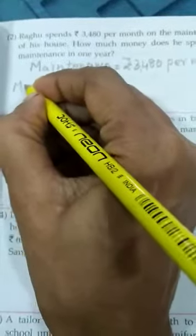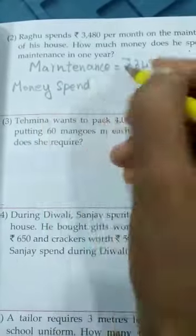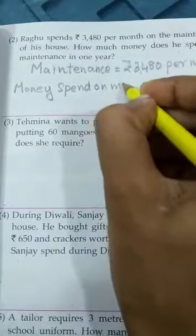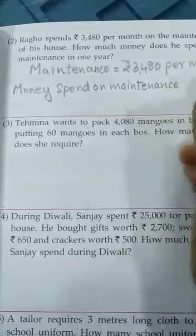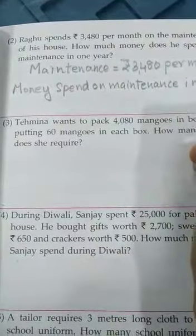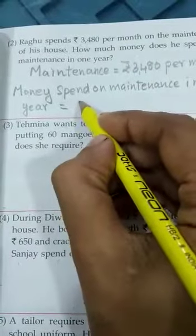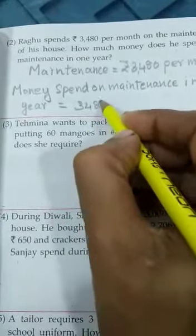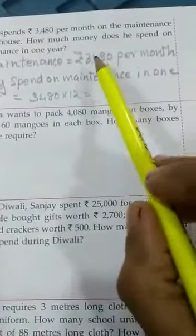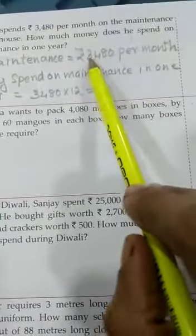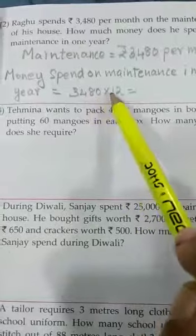So, what will be the money spent on maintenance in one year? Which will be equal to 3480 into 12. How many months are there in a year? 12 months. So, each month they have to spend 3480. Raghu has to spend, that means for one year 3480 into 12.